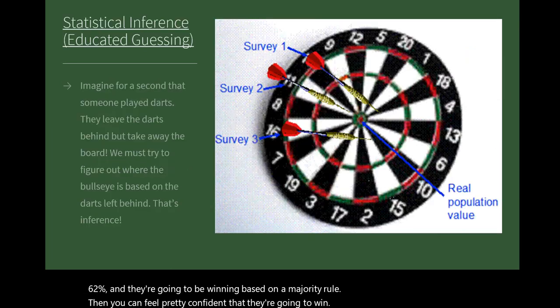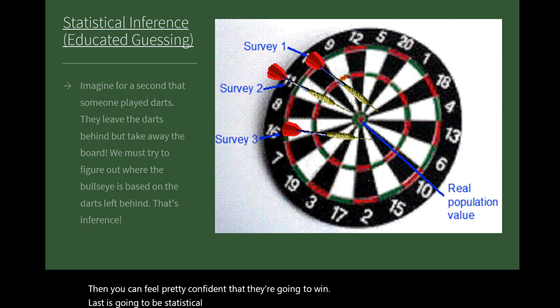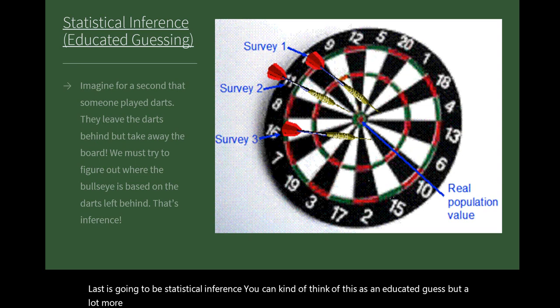Last is going to be statistical inference. You can kind of think of this as an educated guess, but a lot more elevated. Imagine for a second that somebody is playing darts and they're trying to hit the bullseye.